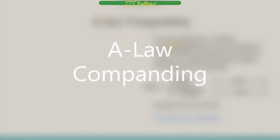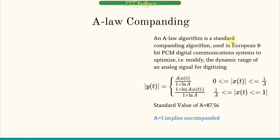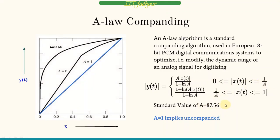The A-law algorithm is the standard used in European 8-bit PCM digital communication systems. The output is given by A|x(t)| / (1 + ln A) when x(t) is between 0 and 1/A. Using the standard value of A = 87.56, 1/A is very small, and in this small range, the slope is very high. In the range from 1/A to 1, the rate of change decreases as amplitude increases.